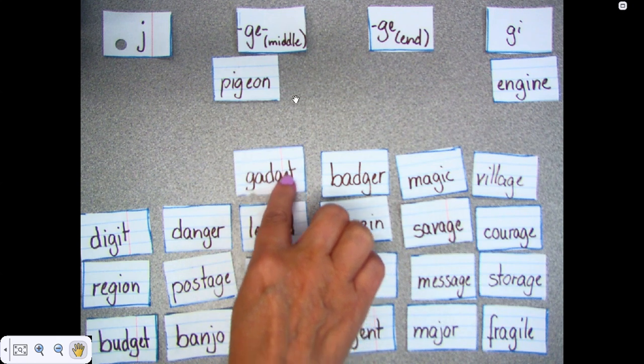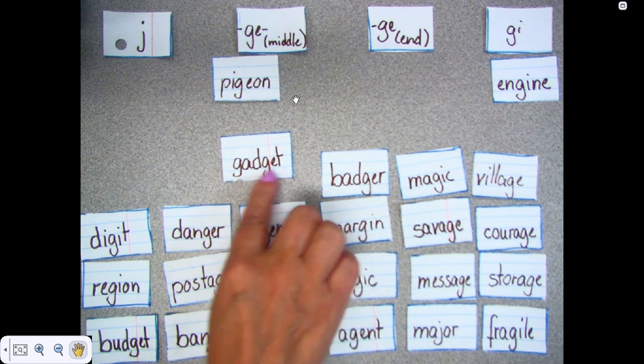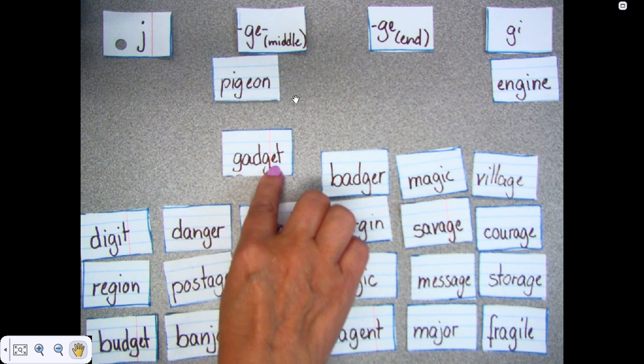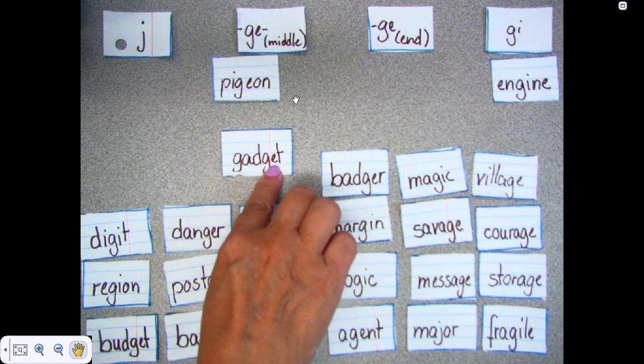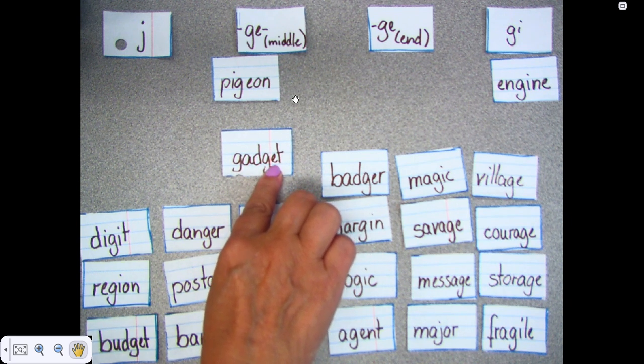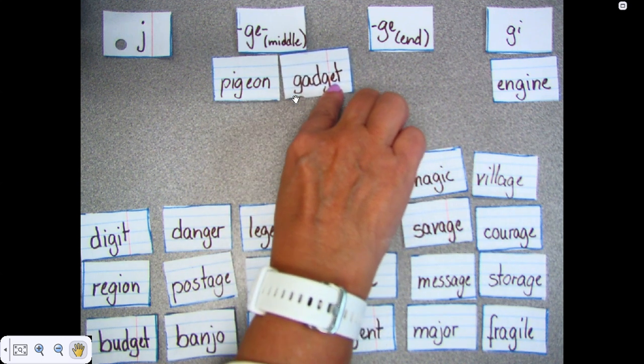Gadget. That makes the J. Gadget. J. So the G-E is my J sound, but there's a T at the end, so it's not the G-E. It's in the middle.